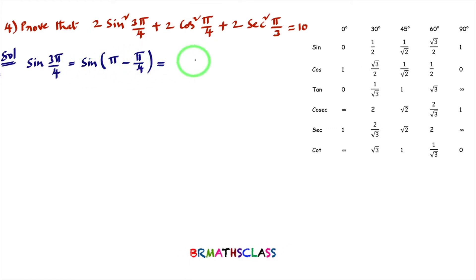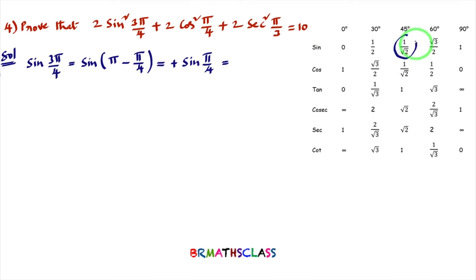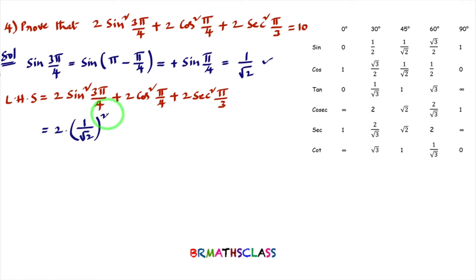Since π is present, the function remains the same — sin. The form π − θ lies in the second quadrant where sin is positive, so sin(π − θ) = +sin θ. Thus sin(3π/4) = sin(π/4) = 1/√2. Now taking LHS: 2·(sin(3π/4))² = 2·(1/√2)².